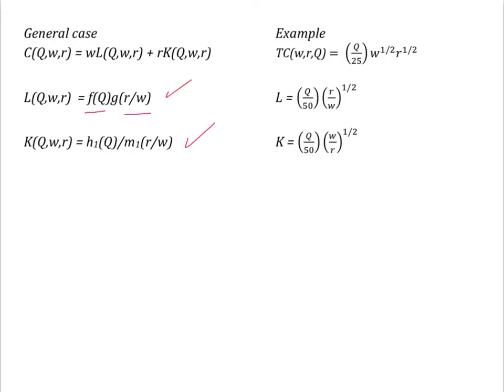For the general case, F, G, H1, M1 are monotonic functions of Q, or the ratio of the input prices.